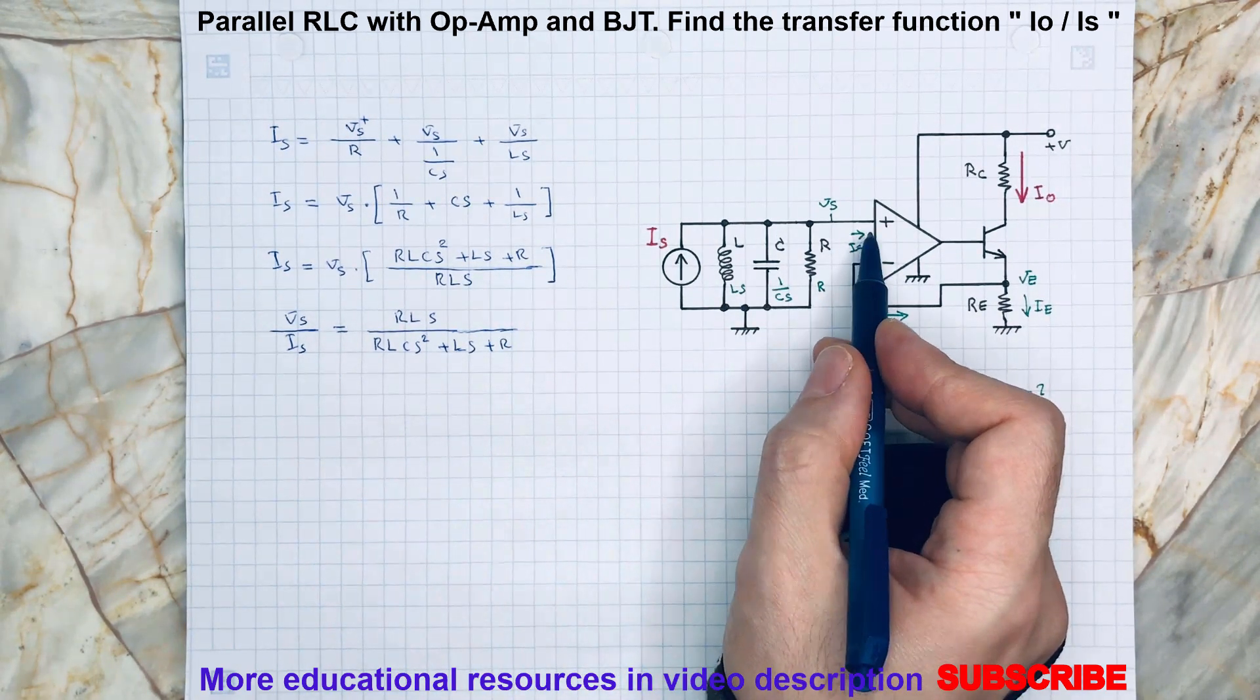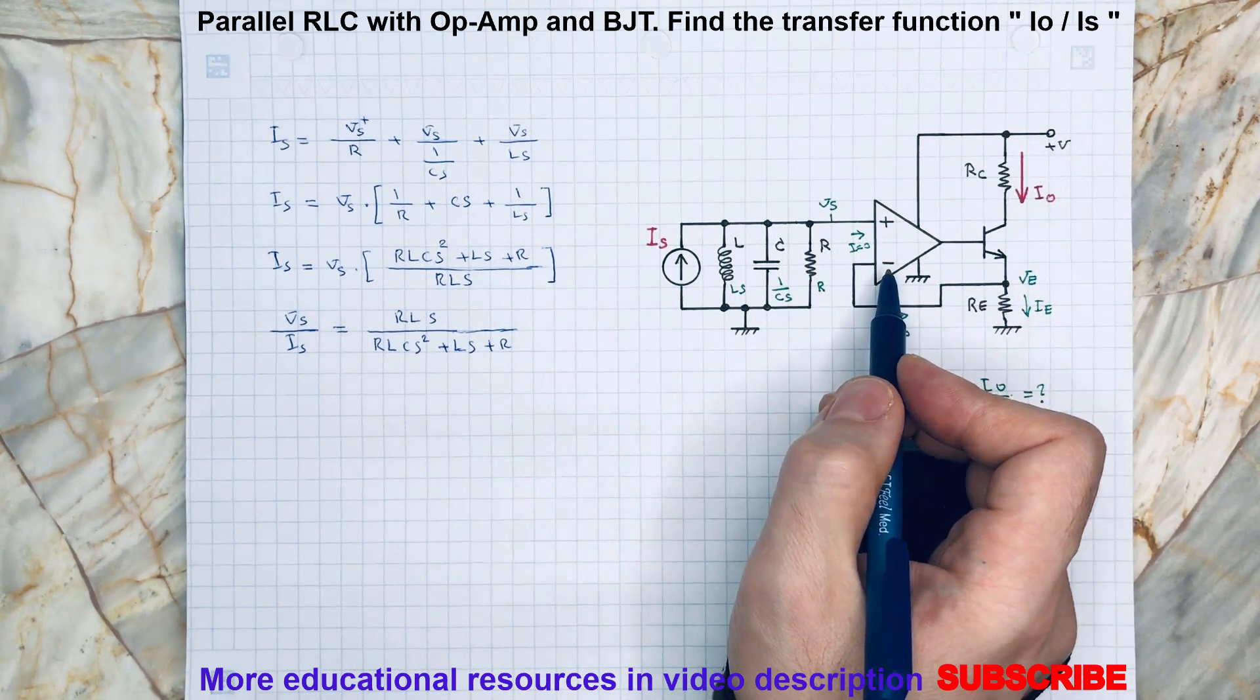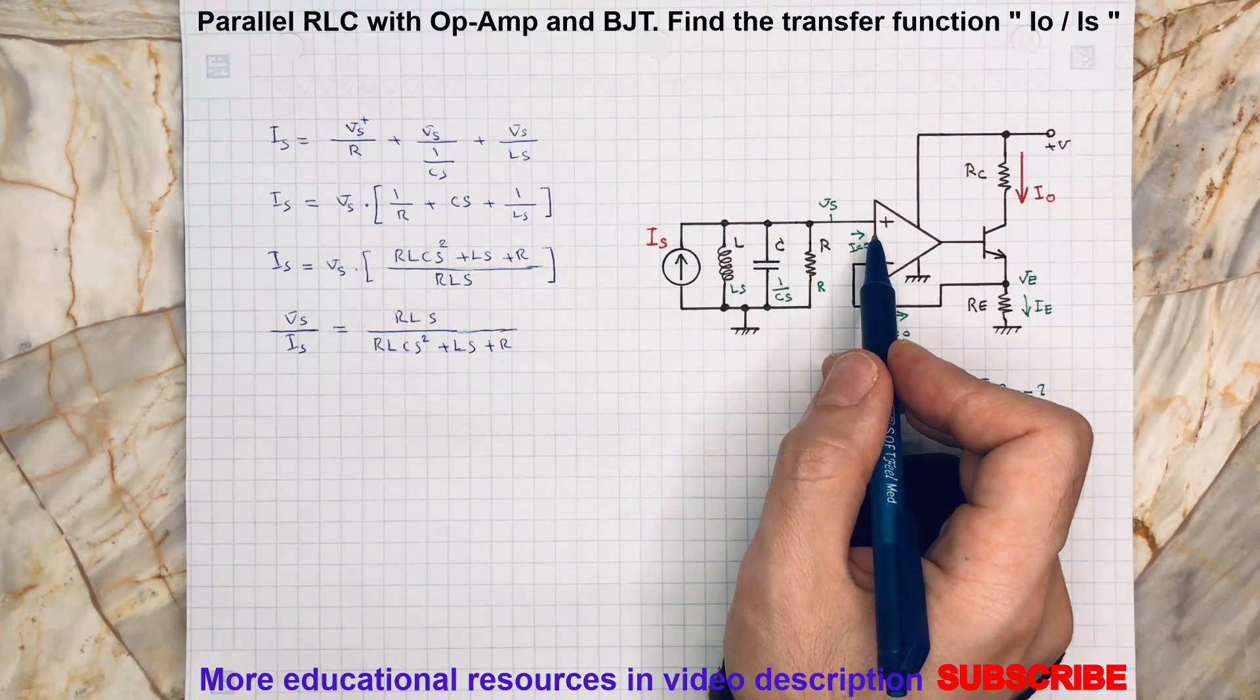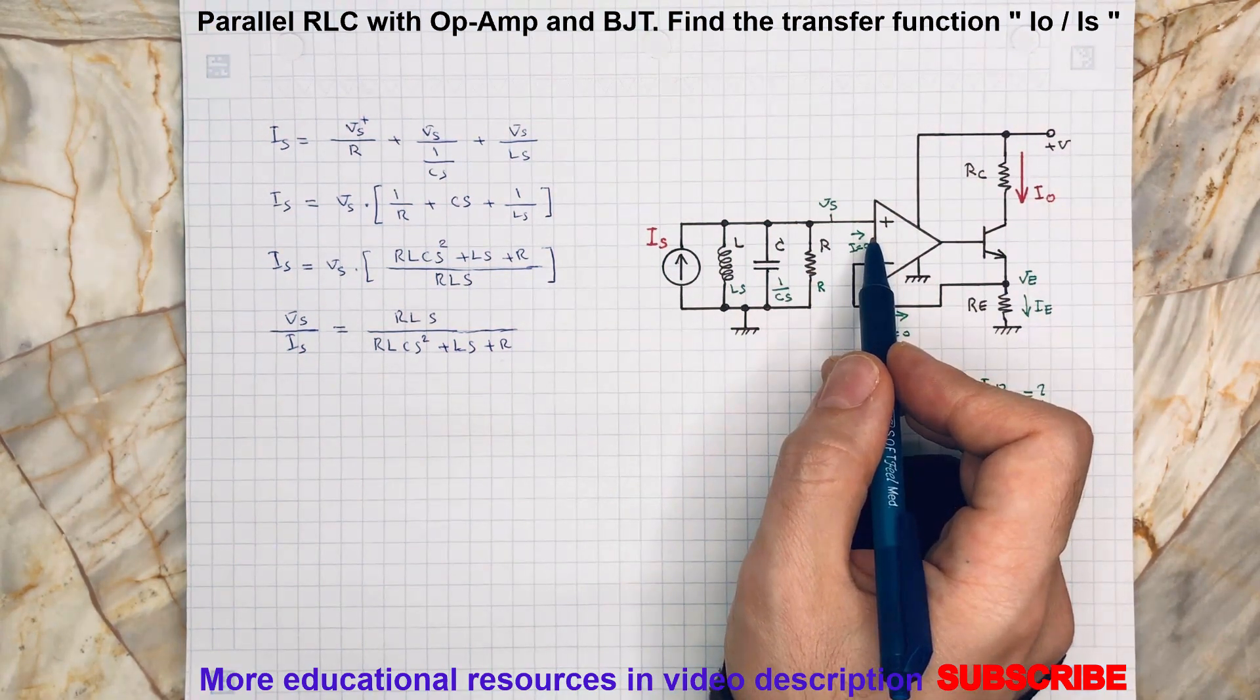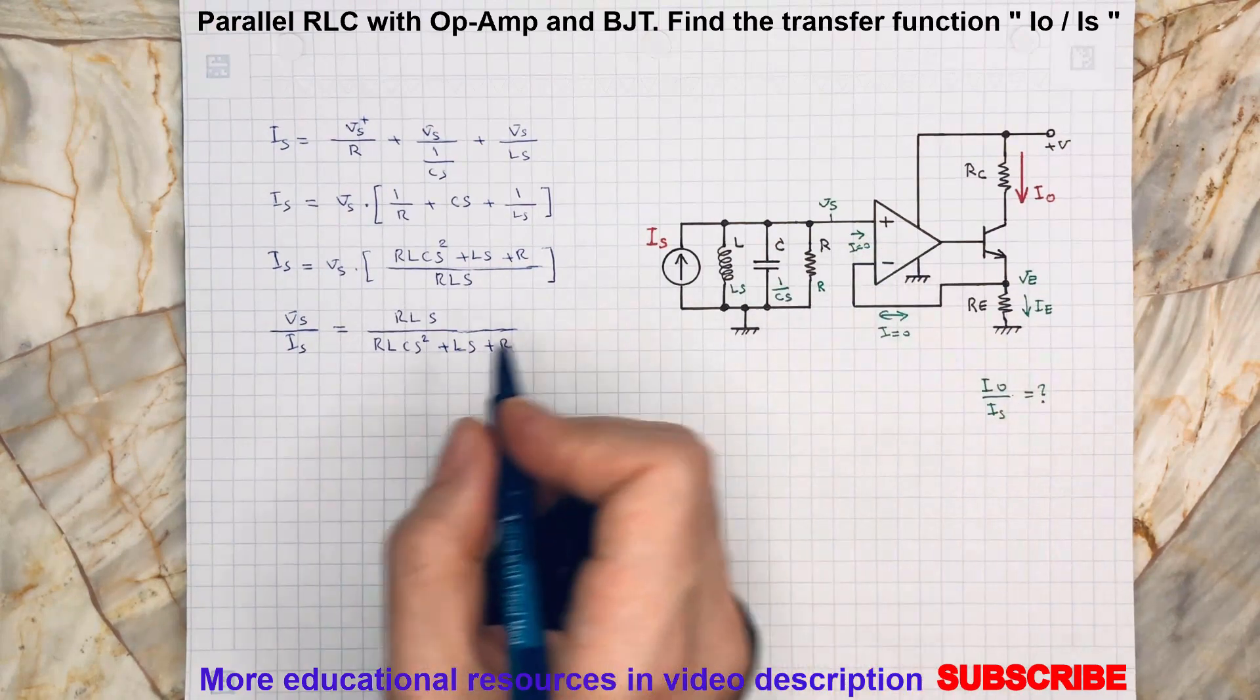By knowing there is no current passing through the op-amp terminals and op-amp tends to keep its terminal voltage at the same level, we can say...